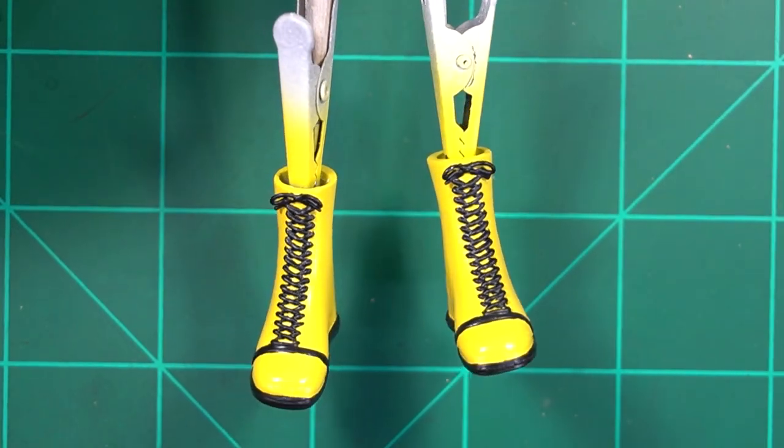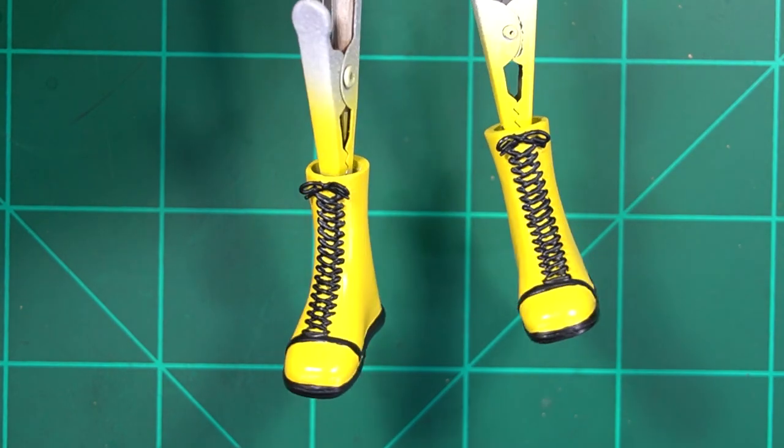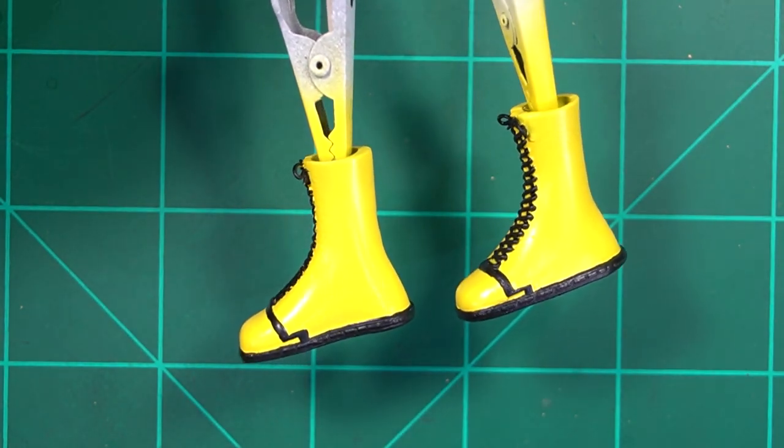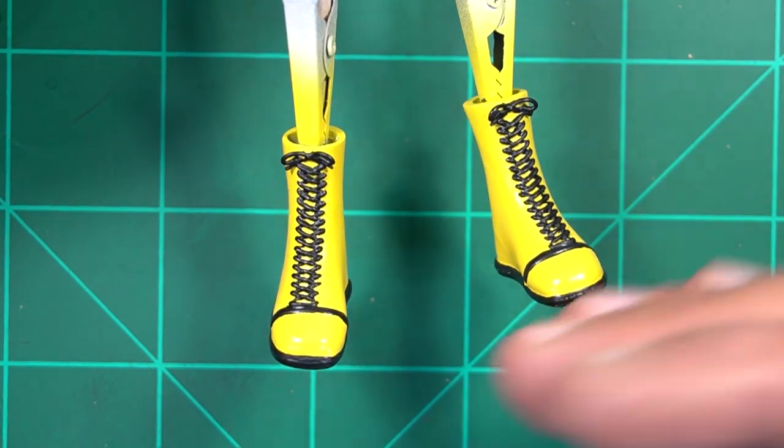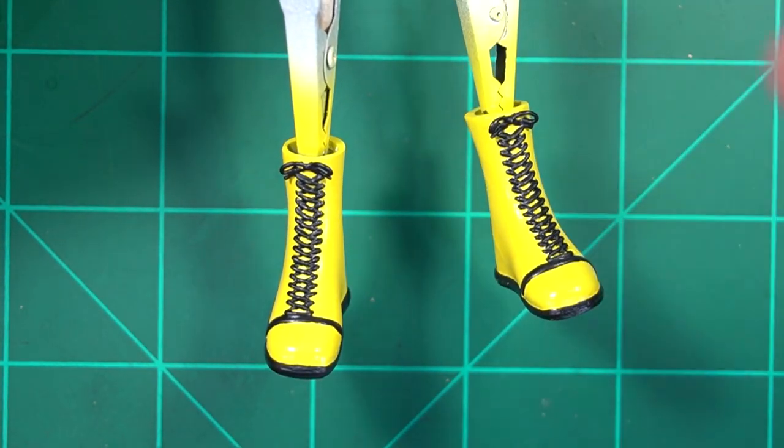Okay we got the tedious aspect of getting all those laces done. Both boots are clear coated and we're going to be working our way up from the bottom to the top. So we have the base done, we got our boots done.